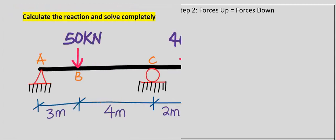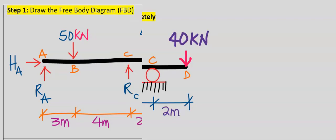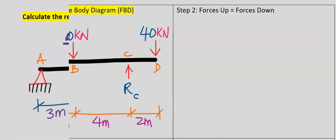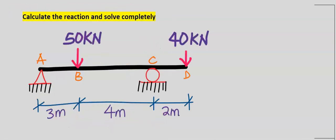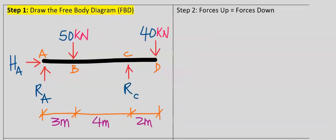Step number one: we're going to draw the free body diagram for the overhanging beam. This is the free body diagram. Instead of solving the given question, we are going to be solving the free body diagram.